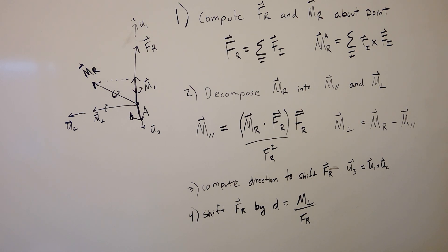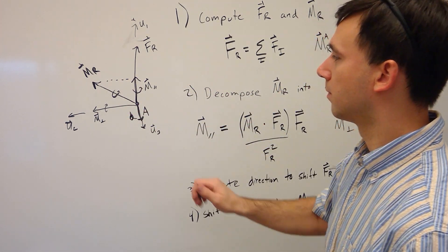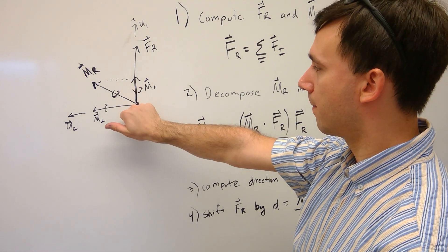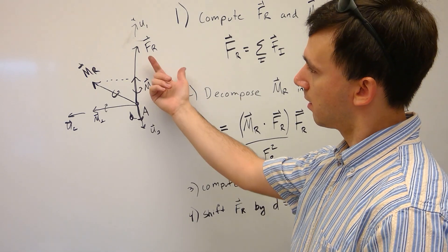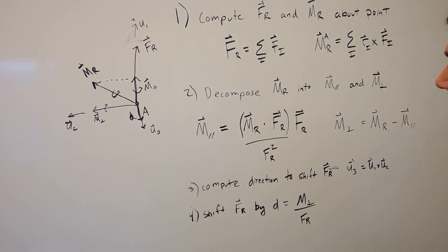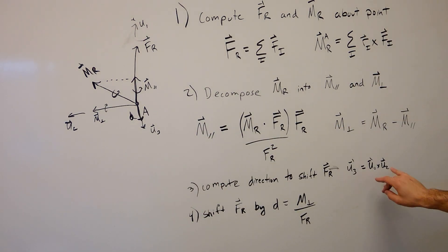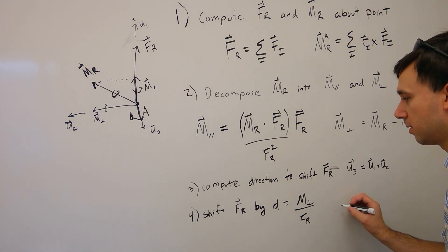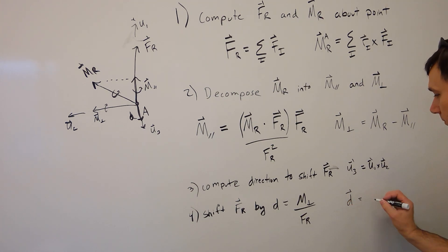If you put your hand in the direction of M_perpendicular, shifting FR along U3 generates a moment in the same sense. The important thing is that it's U1 cross U2, where U1 is the direction of FR and U2 is the direction of M_perpendicular. If you switch the order, you would need a negative sign to get the right sense of the moment. The shift vector is D⃗ = D · U3.